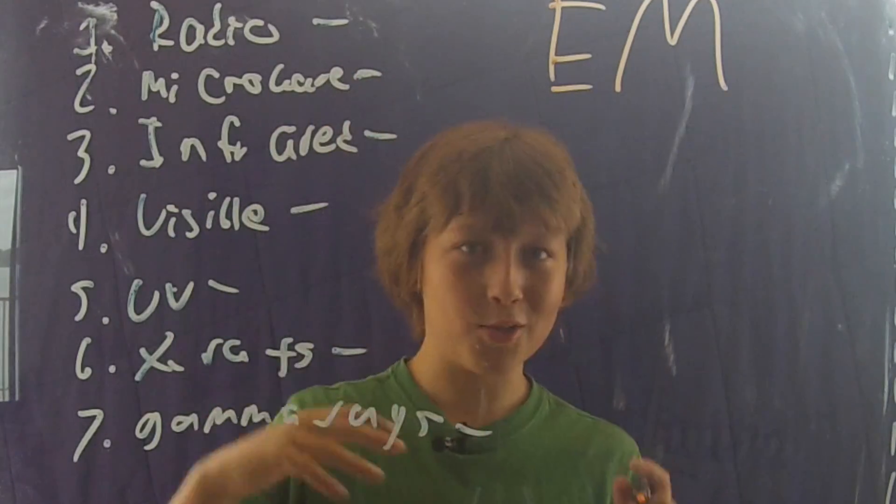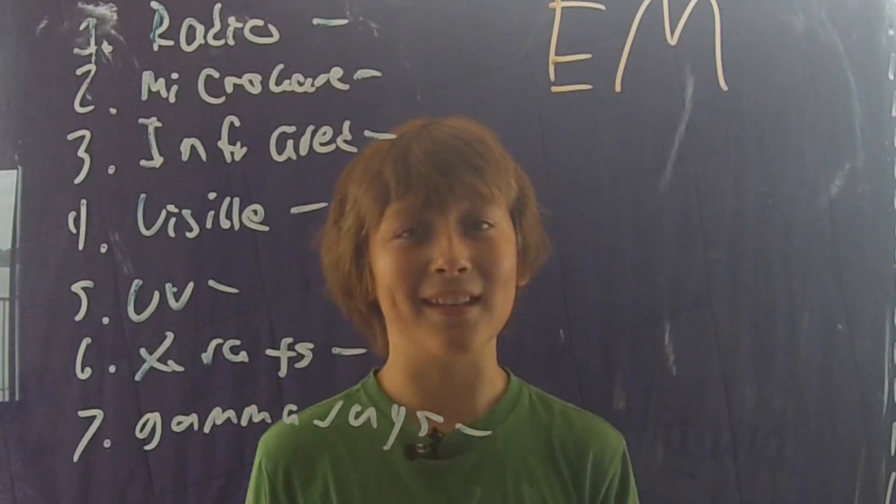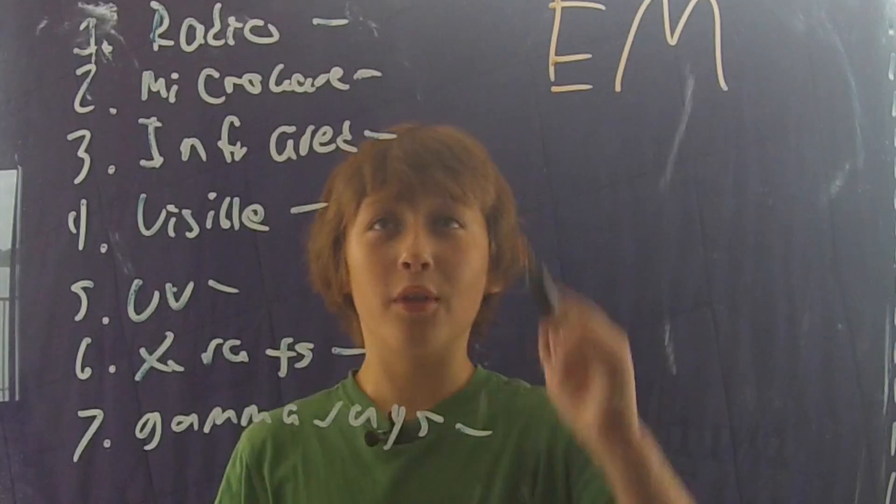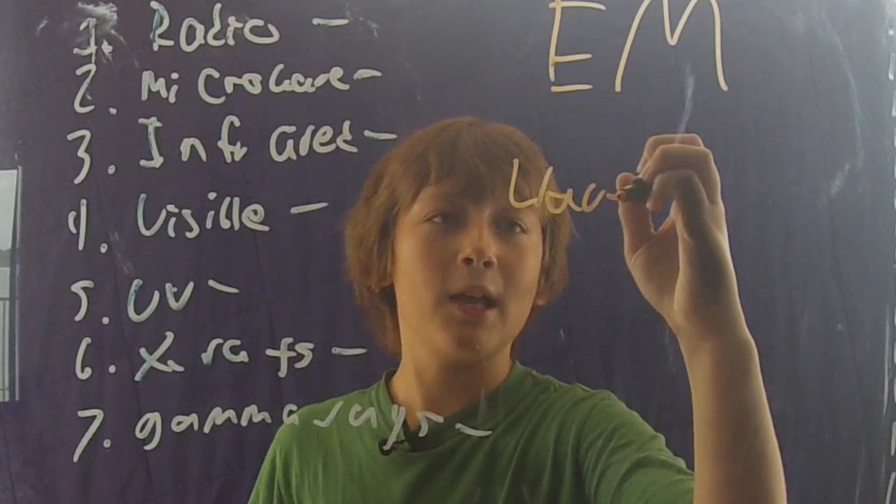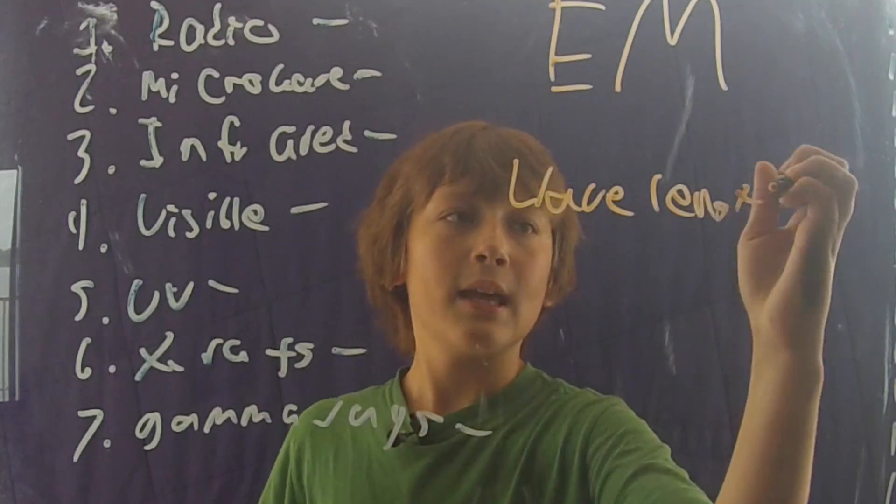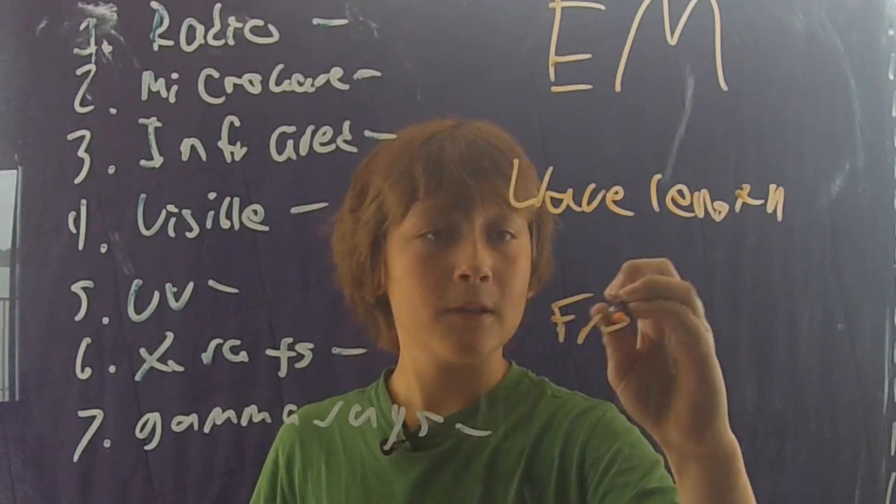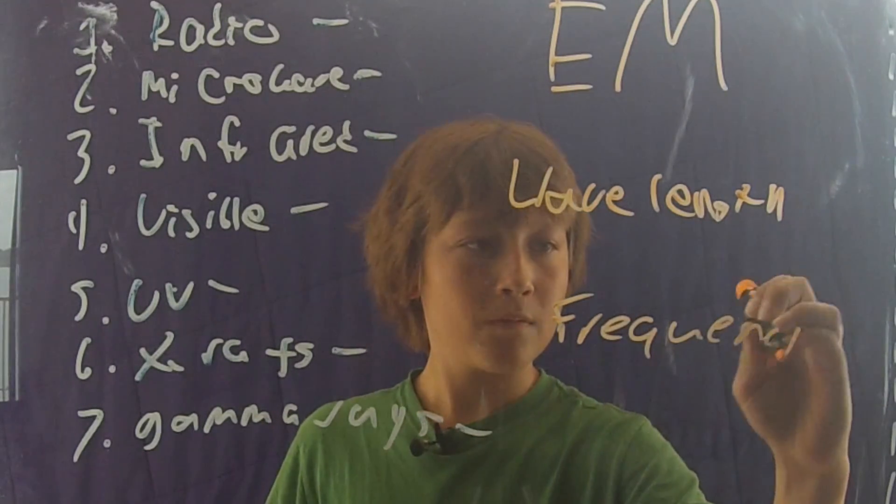So now we know that electromagnetic radiation is just a wave that does not need a medium to travel through. We also know that there are seven different kinds of electromagnetic radiation and they're all determined by their wavelength and their frequency. Thank you.